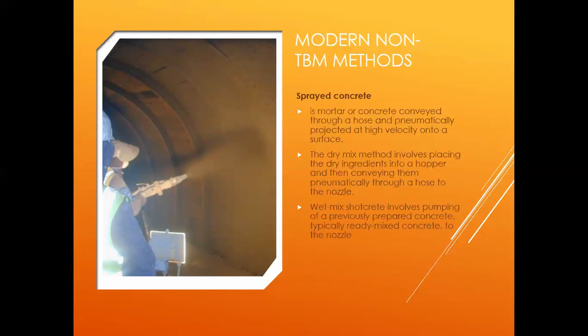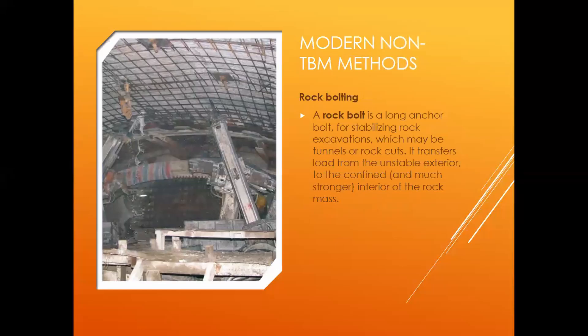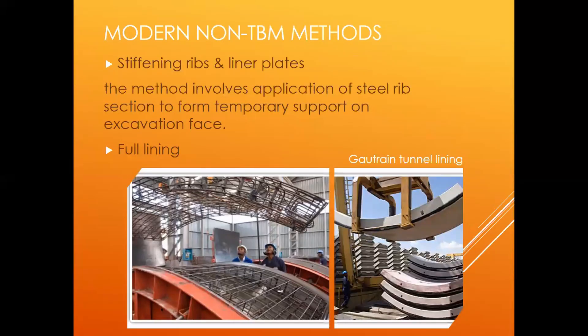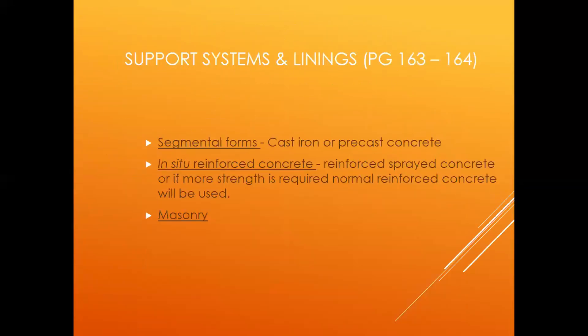Additional methods include the sprayed concrete method, the rock bolting method where you physically bolt the rocks into position, and stiffening ribs and liner plates with full lining — which is what they use in other parts of the Gautrain. The last topic is support systems and lining, covered on pages 163 to 164. Segmental forms, in-situ reinforced concrete, and masonry can all be used.